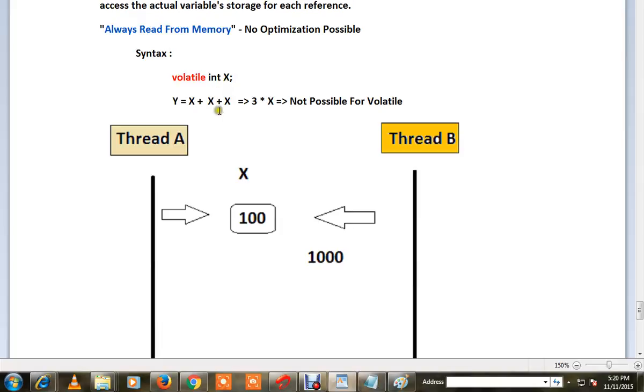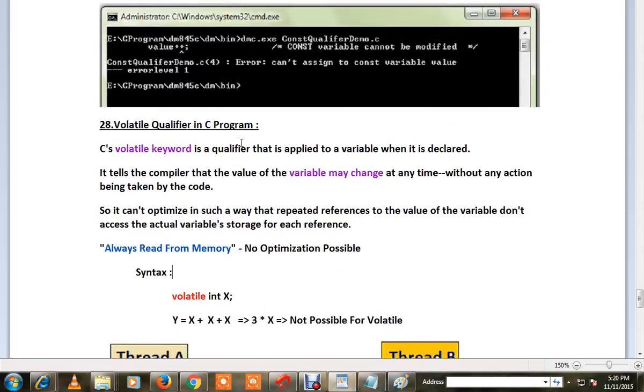So if there is a variable and there is a possibility that anyone can update this variable at any point of time, it should always read from the memory. How can we achieve that? Mark that variable as volatile. Hope this information is useful, thank you.